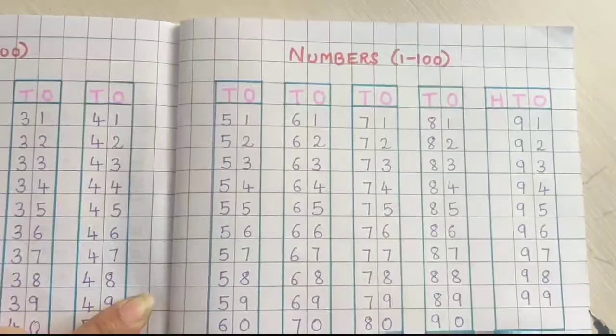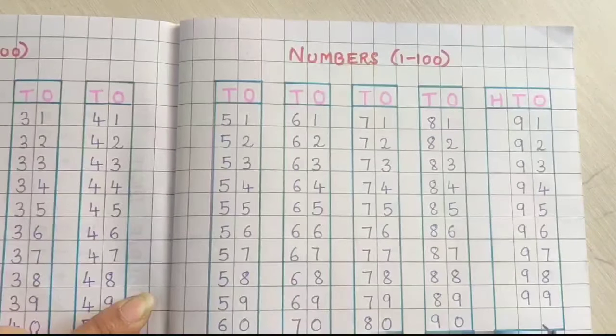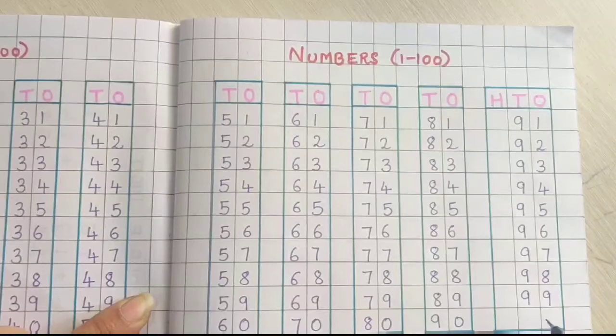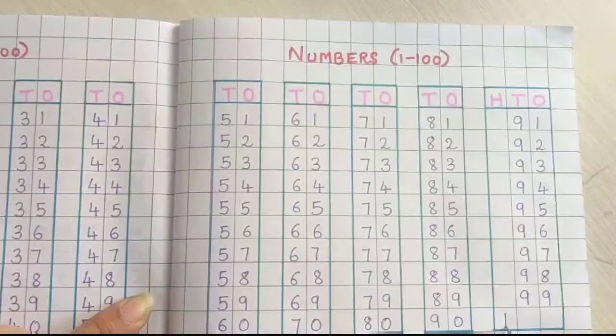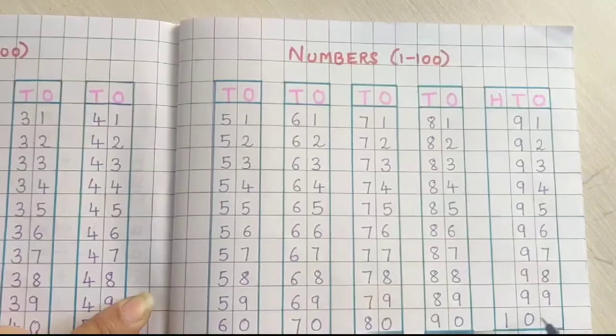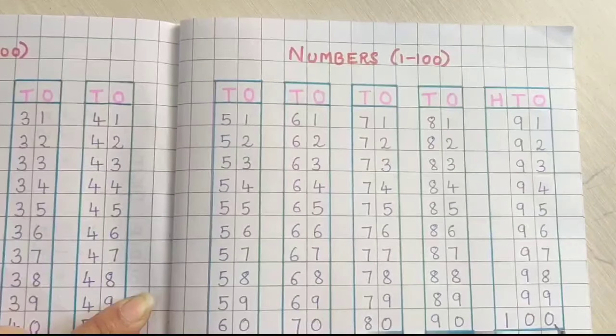99. After 99 comes 100. 100 is a three digit number children, so in the hundreds place I will write 1 and then in the tens and ones place I will write 0. So 100 is 100.